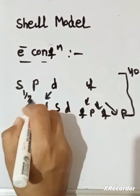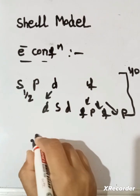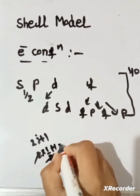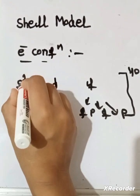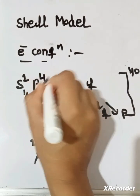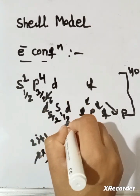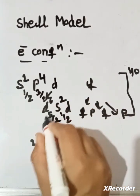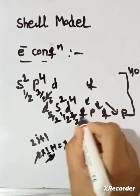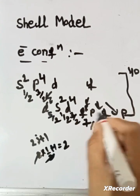For each subshell, j is given and nucleons fill as 2j+1. For S, j = 1/2, so nucleons = 2. For P, j = 3/2, so nucleons = 4. For D, j = 5/2, so nucleons = 6. Filling order continues: S (j=1/2) gives 2, then j=5/2 gives 6, then j=3/2 gives 4, then j=5/2 again.